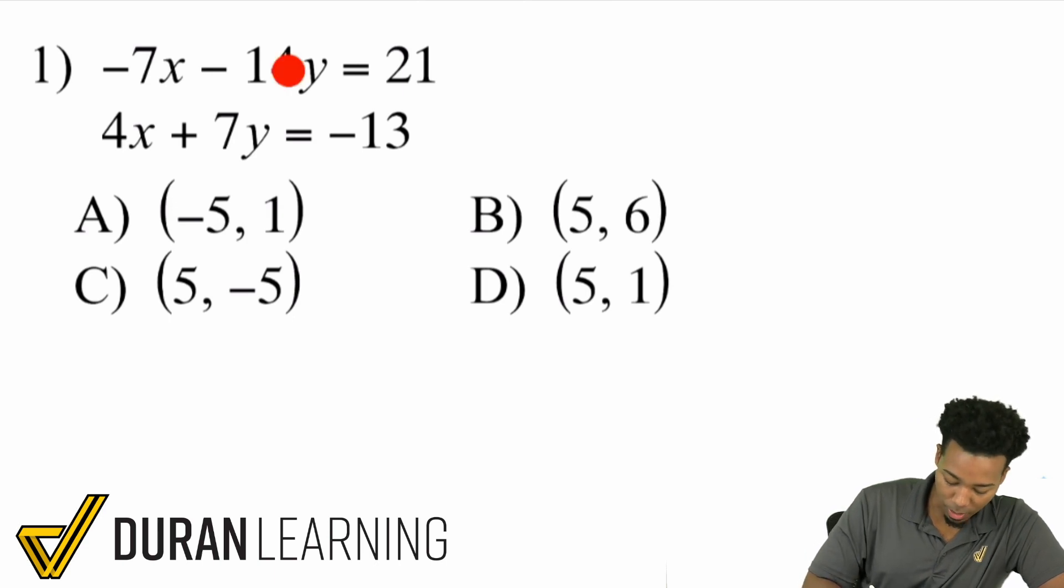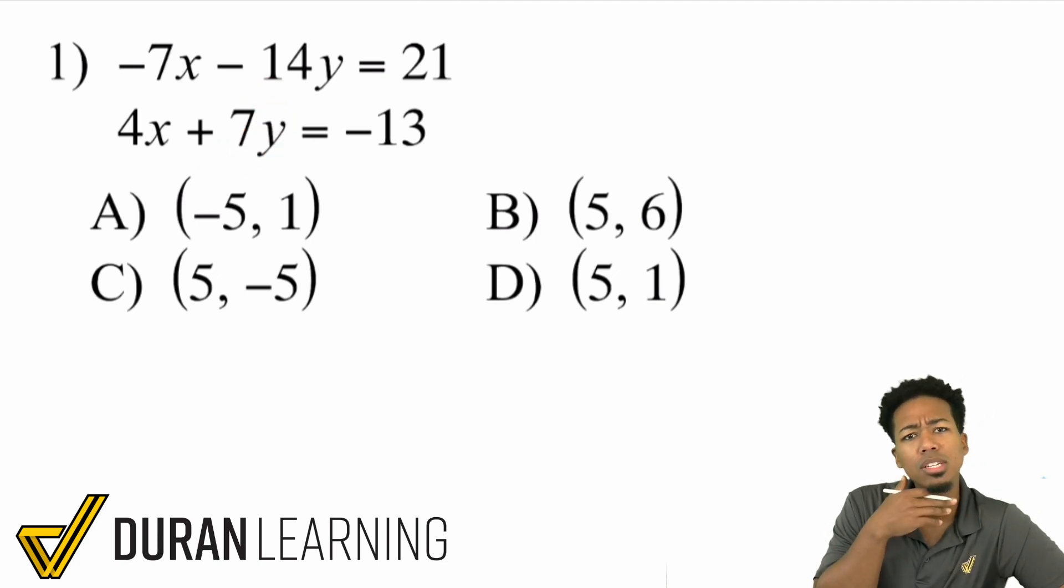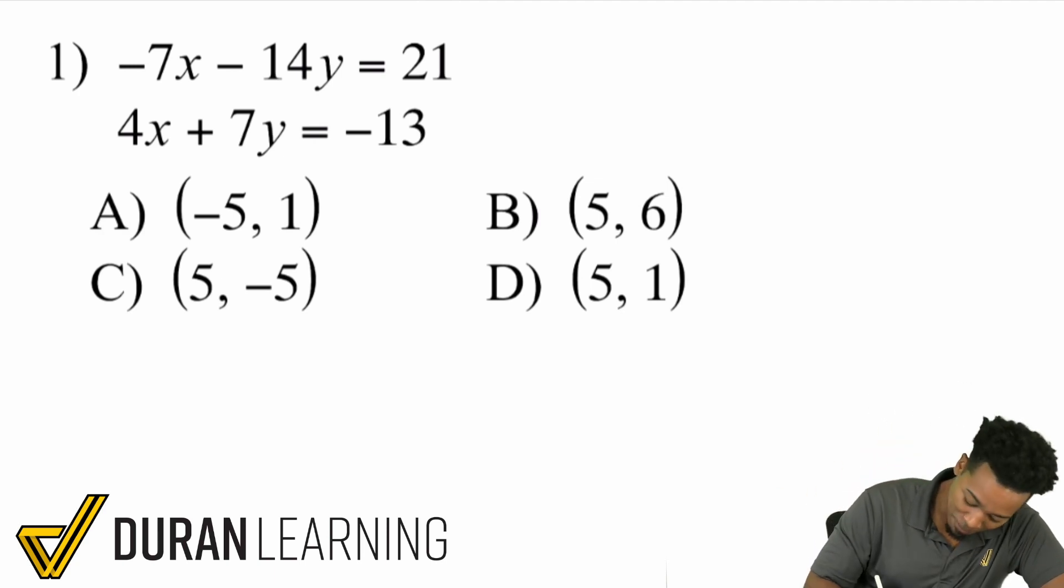If I take a look right over here, we have negative 14 and a positive 7. What would happen if I wanted to take that 7 and make it a 14? How would I make that 7 a 14? By multiplying by 2, right? So we're going to multiply that entire equation by 2. That's it. This is going to be pretty cool.